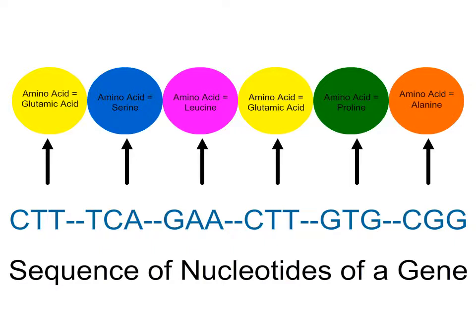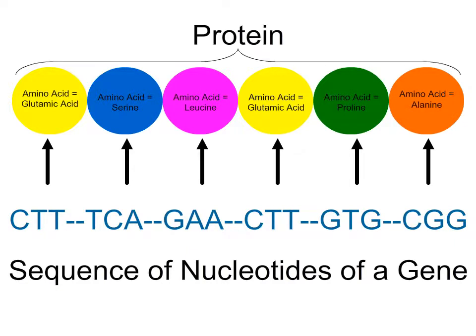We all know what biological molecule is formed with the polymerization of amino acids — yes, a protein. The specific nucleotide sequence of a gene is the recipe for a specific sequence of amino acids to eventually make a specific protein.